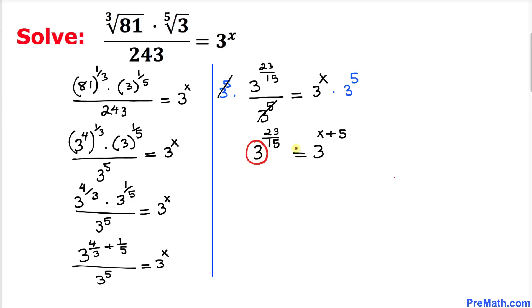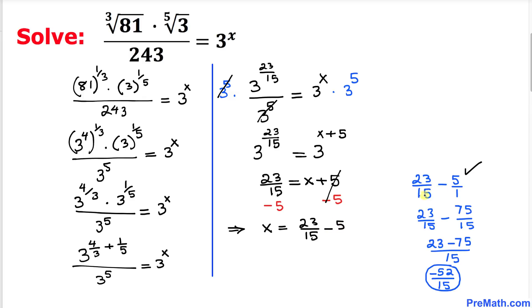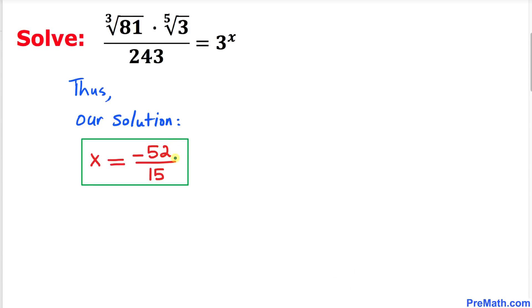We can see that the bases are the same — 3 on both sides — so we can equate the exponents: 23 over 15 equals x plus 5. Subtracting 5 from both sides gives x equal to 23 over 15 minus 5, which simplifies to negative 52 over 15. So our solution is x equals negative 52 divided by 15.